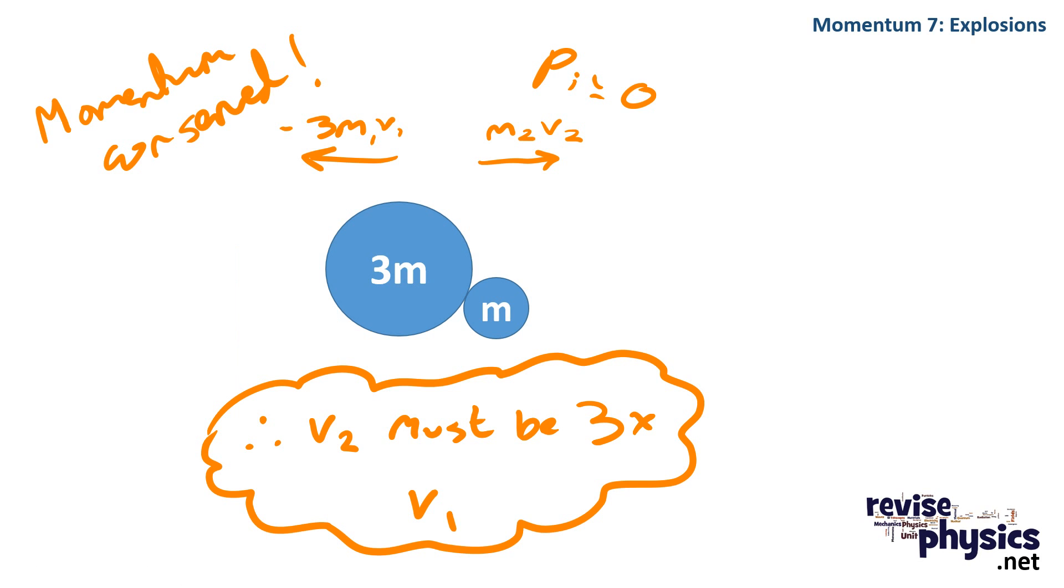For example, here I have two masses. One has a mass three times that of the other. Now, momentum is conserved, so we know that initial momentum is zero.